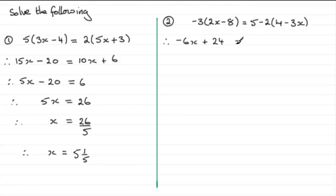And then on the right hand side here as I say we don't do 5 take away 2 we've just got 5. Now we do minus 2 times the 4 and minus 2 times the minus 3x. So minus 2 times the 4 is minus 8 and minus 2 times minus 3x is plus 6x.